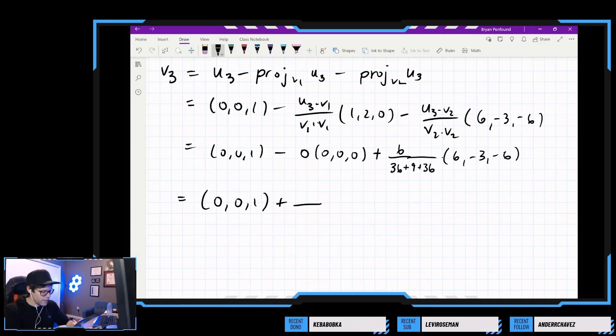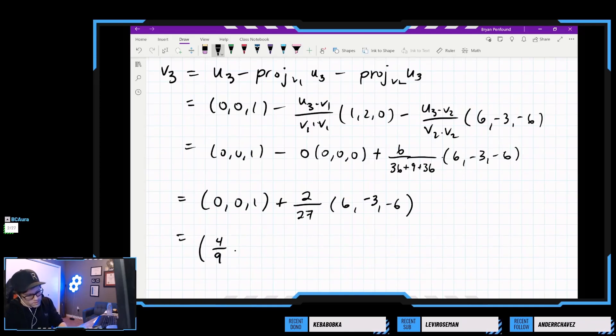That can be simplified. So this is 2 over 27. So first component is going to be 2 times 6 over 27, which is 4 ninths. Second component is going to be 2 times negative 3 over 27, which is negative 2 ninths. And third component is 1 plus 2 over 27 times negative 6, which is 5 ninths.